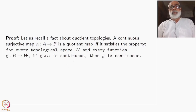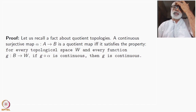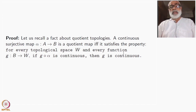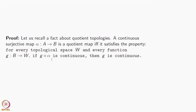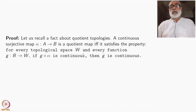Let us recall a fact about quotient topologies. A continuous surjective map of topological spaces is a quotient map if and only if it satisfies the following property: for every topological space W and every function g from B to W, if the composite g∘α is continuous, then g must be continuous. If g is continuous then the composite is obviously continuous; here it is the other way around. If this is satisfied for every g, then α is a quotient map. This has been proved and used several times.